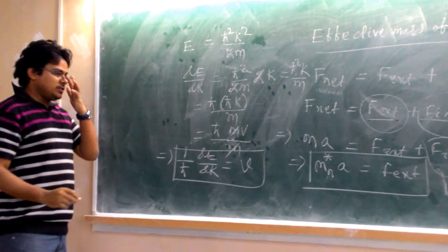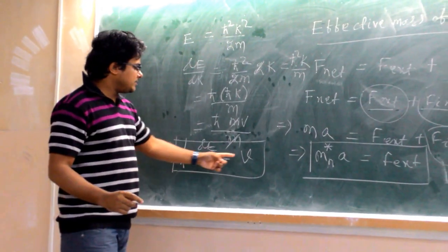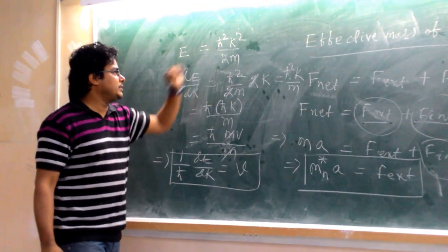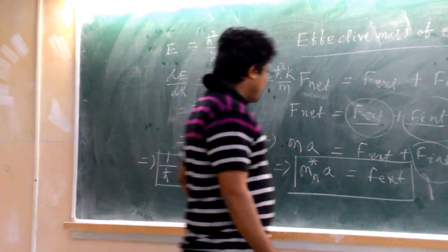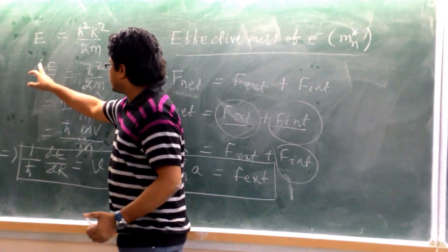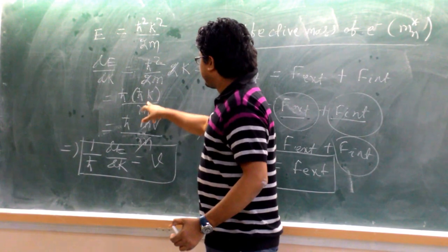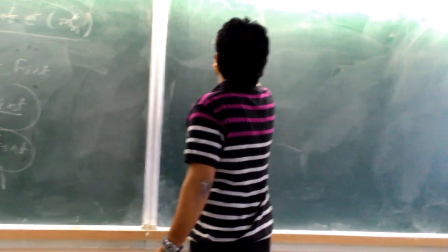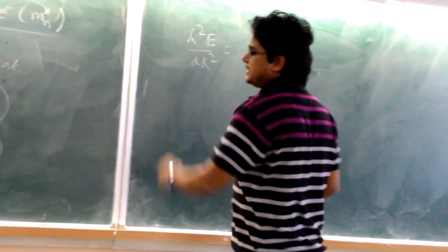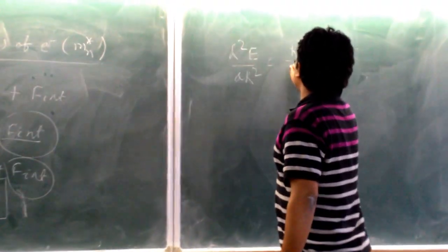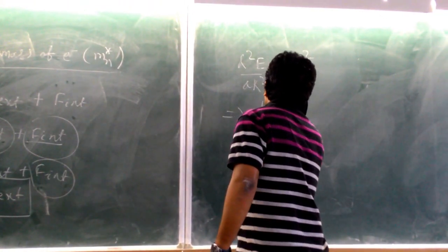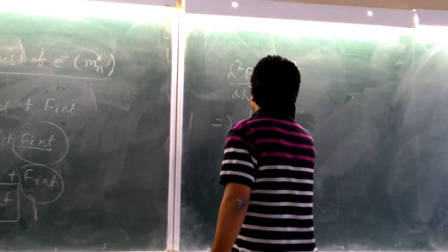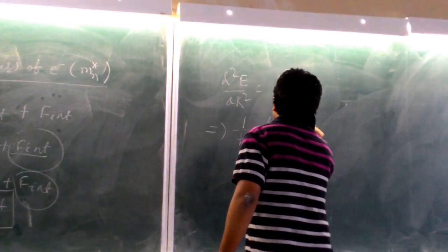Now taking the second derivative: from dE/dk = ℏ²k/m, we get d²E/dk² = ℏ²/m. Hence we can write: (1/ℏ²)(d²E/dk²) = 1/m. So the second derivative of energy with respect to k is associated with the reciprocal of the mass.